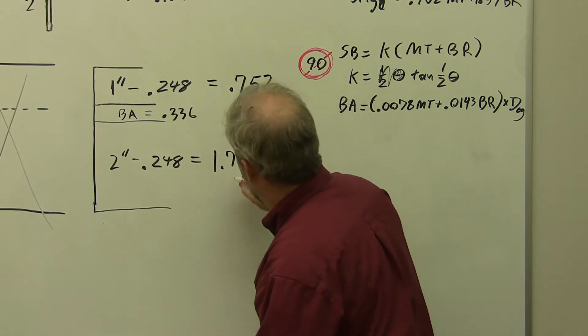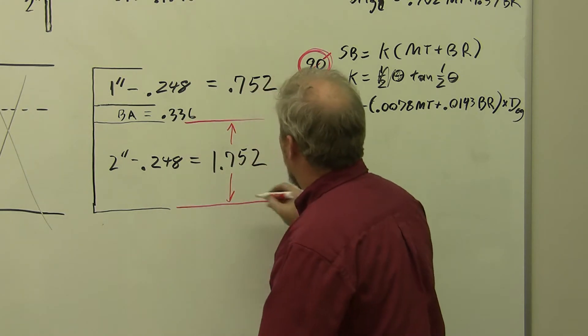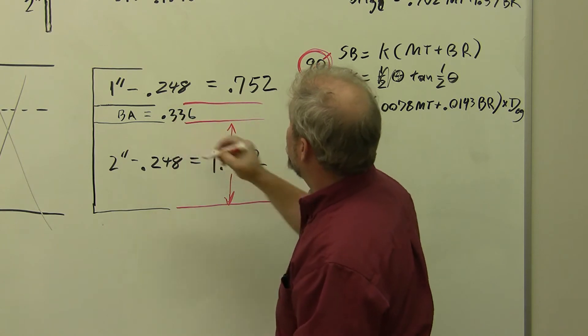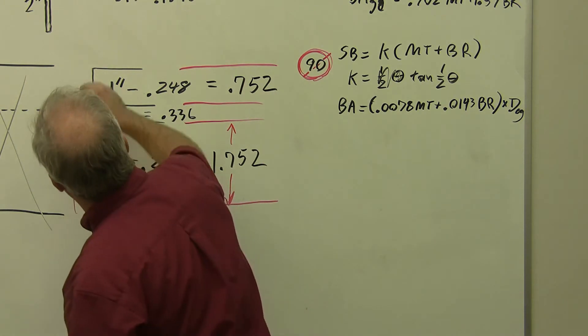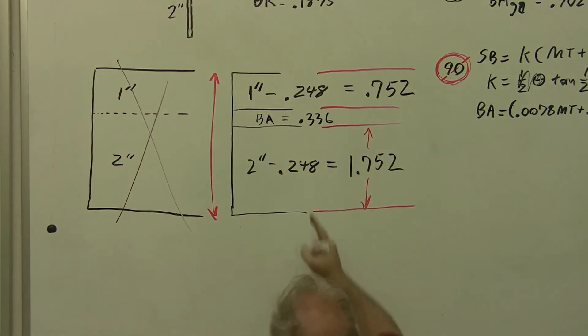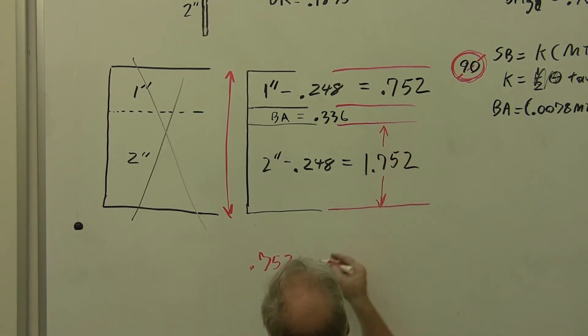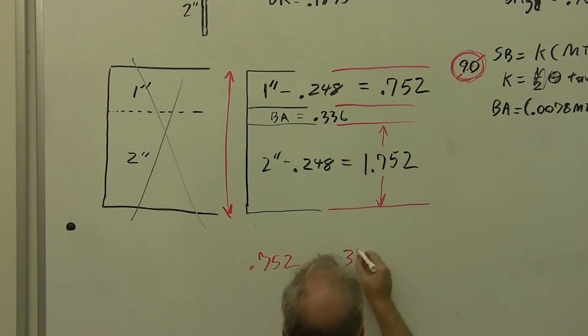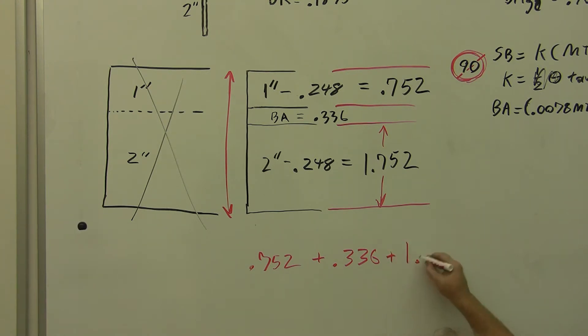So the distance from here to here, continuing these lines across, 1.752 plus 0.336 plus 0.752. And the total width of our developed flat, which is one of the things we need to know, is going to be equal to 0.752, that first number, plus 0.336, that's the second number, plus 1.752. That's equal to our total. Now, I can't do that in my head, but my calculator can do it. 0.752 plus 0.336 plus 1.752. And it spits out an answer at me, 2.84 inches.